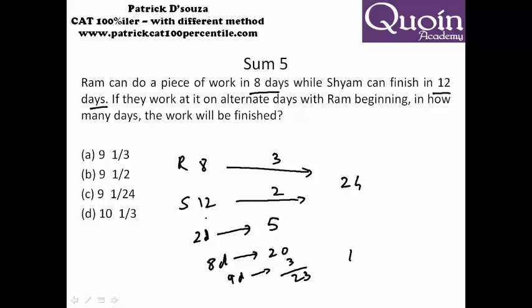So left is 1 unit of work which Shyam has to do. Shyam does 2 units of work in 1 day, so 1 unit of work will take 1 upon 2 days, which will be 9 1/2 days. So I hope you understood this method.